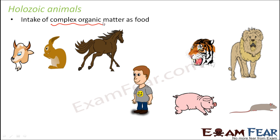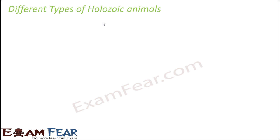All animals which eat solid complex food are called holozoic animals. Among holozoic animals there are different categories — based on their food habit, they are classified into three types.